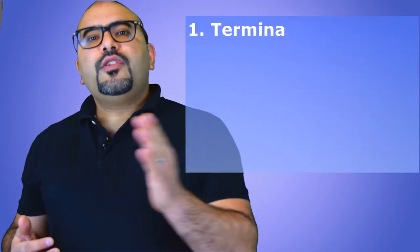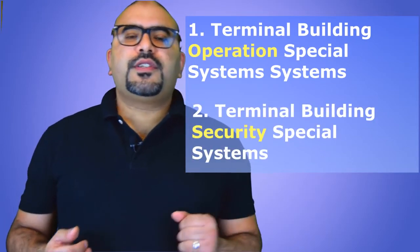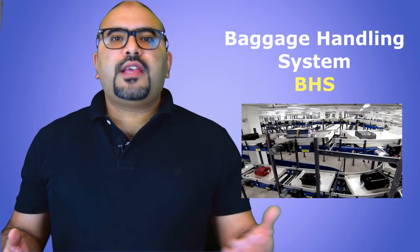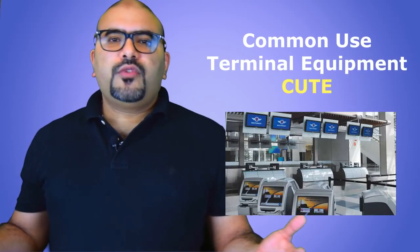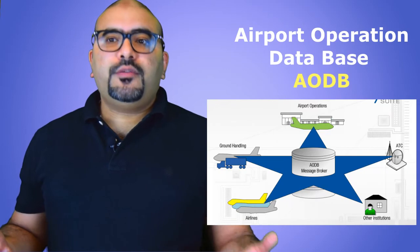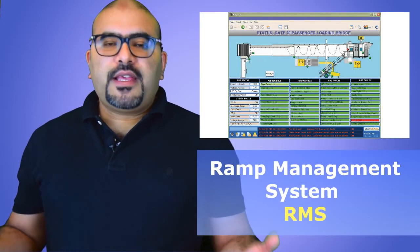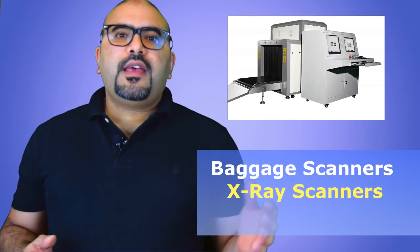As mentioned, any airport consists of two main special systems categories: air side and terminal building special systems. The terminal building special systems can be categorized into terminal operation special systems and terminal security special systems. Terminal operation special systems include BHS (Baggage Handling System), PBB (Passenger Boarding Bridge), CUTE (Common Use Terminal Equipment), AODB (Airport Operation Database), and RMS (Ramp Management System). Airport security systems mainly consist of baggage scanners or X-ray systems and metal detection walkthrough systems.